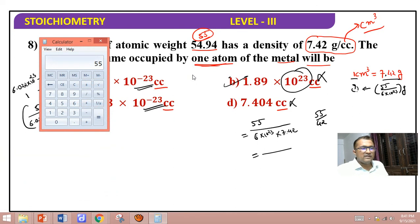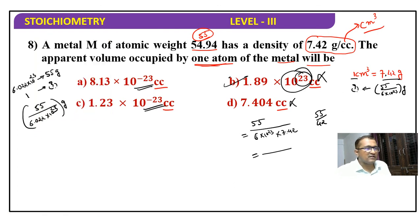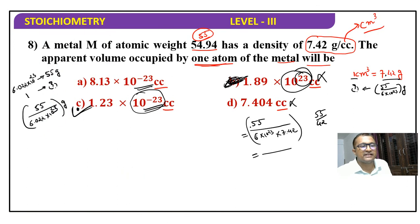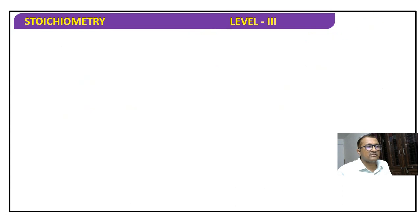Let me calculate: 55 divided by 6.022, divided by 7.42, gives 1.23. And 1 point something is the answer. Not plus 23, I made a mistake. C option, 1.23 into 10 raise to minus 23. The answer is C. 55 by 42 gives 1 point something with power 10 raise to minus 23. So finally C is the correct answer.